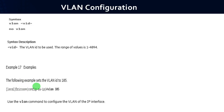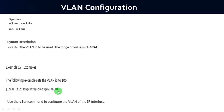If you want to do VLAN configuration, follow the syntax: vlan <vlan id>. The VLAN id range is 1 to 4094. For example, to create VLAN id 105 for the attached unit, type: vlan 105, which assigns VLAN id 105 to the attached unit. Use the vlan command to configure the VLAN of the IP interface.